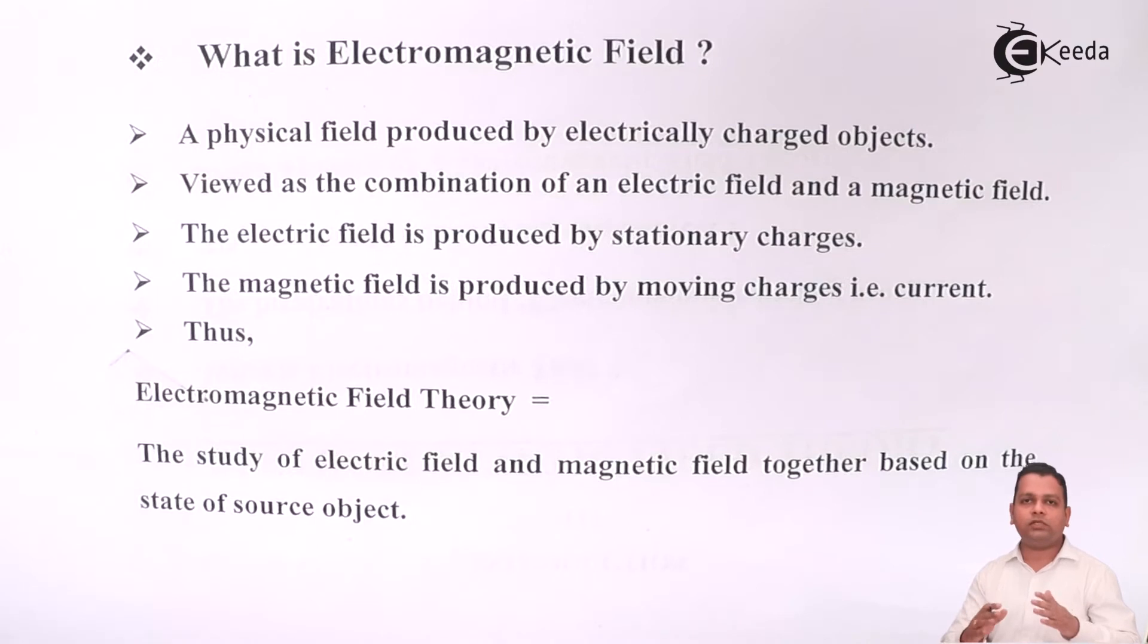The term can be split into two fields: electric field and magnetic field. Electric field is produced because of static charges,